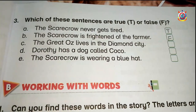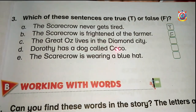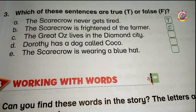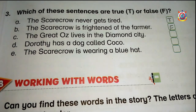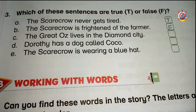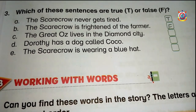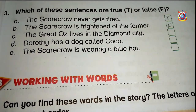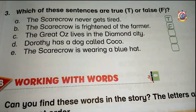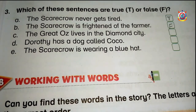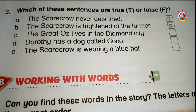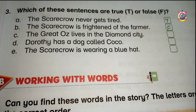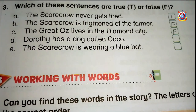The third sentence is: the great Oz lives in the diamond city. Now try to remember which city Dorothy was going to. That was Emerald City — very good. Here they say the great Oz lived in the diamond city, but Dorothy was going to Emerald City. Great Oz lived in Emerald City, so this sentence is wrong and incorrect. We will write F here.